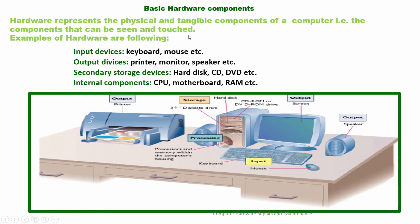Basic hardware components. Hardware represents the physical and tangible components of a computer — that is, the components that can be seen and touched. Examples of hardware include input devices like a keyboard and mouse; output devices like a printer, monitor, and speaker; secondary storage devices like a hard drive, CD-ROM, flash drive, and so on; and internal components inside the computer, like a motherboard, CPU, and RAM. Here we can see a keyboard and mouse as input devices, a speaker, a typical desktop computer, and a printer.